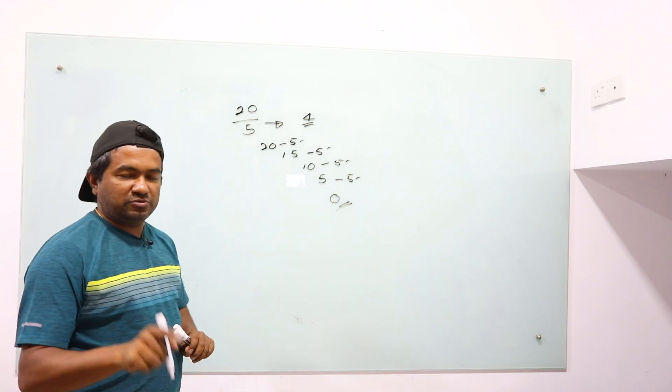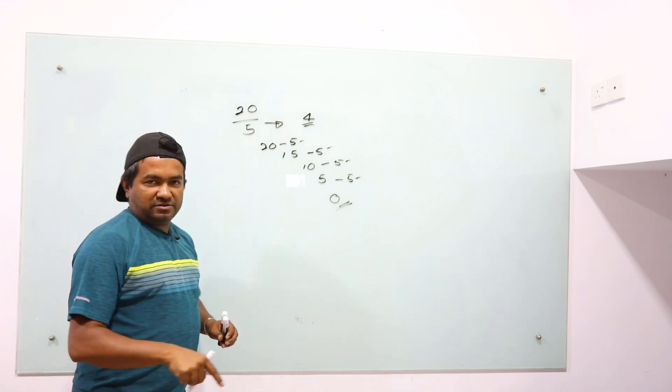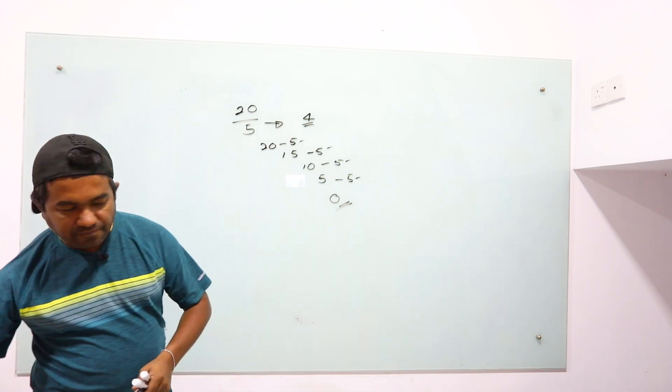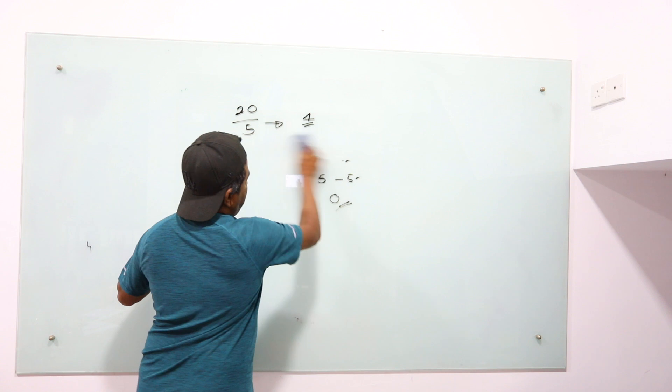So it says 20 divided by 5 is 4, right? So that's how computers do division. Same way, if computers were to do modulo, they do addition.